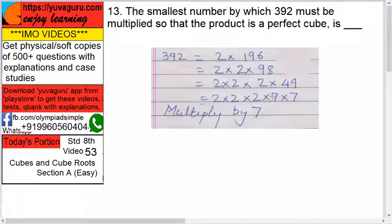But is it a perfect cube then? No. If you multiply with 7, then it will be a group of 3 again, so it can be a perfect cube. Because for anything to be a perfect cube, very important is there should be groups of 3.